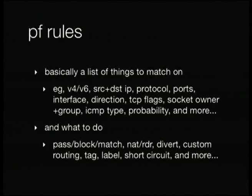PF rules are basically a list of things to match on — criteria applied to the packet: whether it's IPv4 or v6, IPs, ports, protocol. You can get very fine-grained with TCP flags and ICMP types. Interestingly, you're also able to filter on the user IDs and group IDs of the process a packet is destined for, which is kind of cool — you can make sure packets to a certain port only get processed by a certain user on the system.